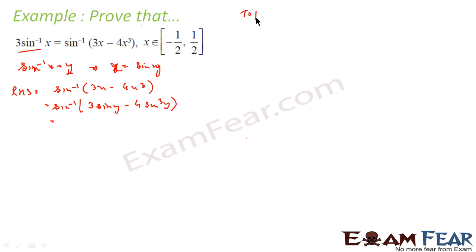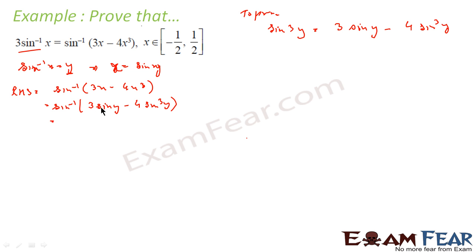Our challenge here is to prove that sin 3y = 3 sin y − 4 sin³y. Because the RHS requires sin⁻¹(something) = 3y, that something must equal sin 3y, since sin⁻¹(sin 3y) = 3y.